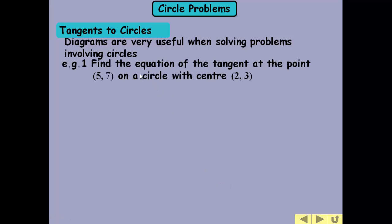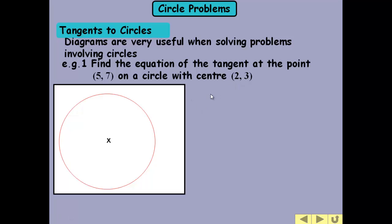I will always advise you to draw diagrams when solving circle problems. Draw it out and it tells you a lot of the information visually, makes it a lot easier to answer the questions. So we're trying to find the equation of the tangent at the point (5, 7) on a circle with center (2, 3). So we can put that information in, 2, 3 is the center.